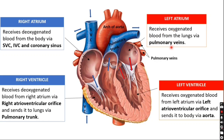In the lungs, breathing occurs — oxygen and carbon dioxide are exchanged. After oxygenation, the oxygenated blood is carried through the pulmonary veins. Note that pulmonary veins, unusually, carry oxygenated blood. This oxygenated blood drains into the left atrium.